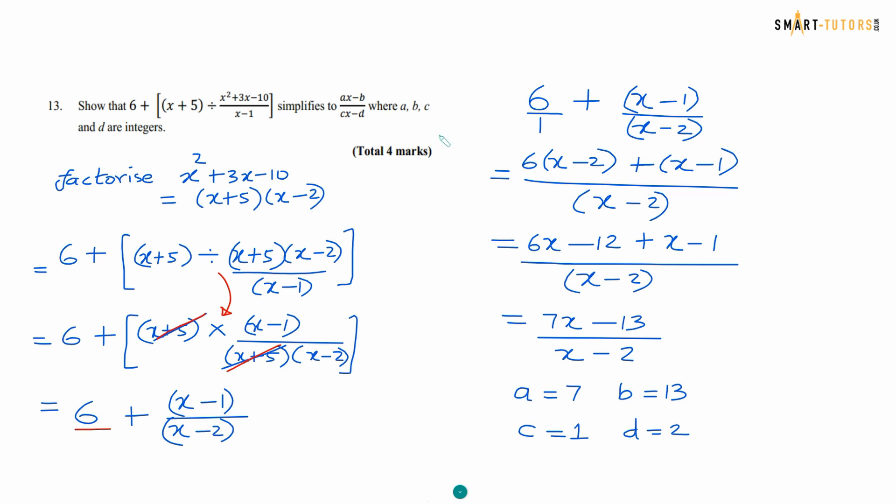Then multiplication x plus 5 x plus 5 cancelled. Then 6 plus x minus 1 over x minus 2. So 6 over 1 is there. Then you do the LCM. You times both by, so cross multiply basically. 6 times x is 6 brackets x minus 2. 1 brackets x minus 1 over x minus 2. Expand the bracket. 6x minus 12 x minus 1. 7x minus 13 over x minus 2 is the answer. So you write it down all the ABCD numbers.